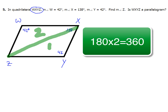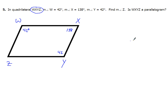Once I remember that there are 360 degrees in a quadrilateral, I'm just going to add up all my angles. The measure of angle W is 42, and the measure of angle X is 138.